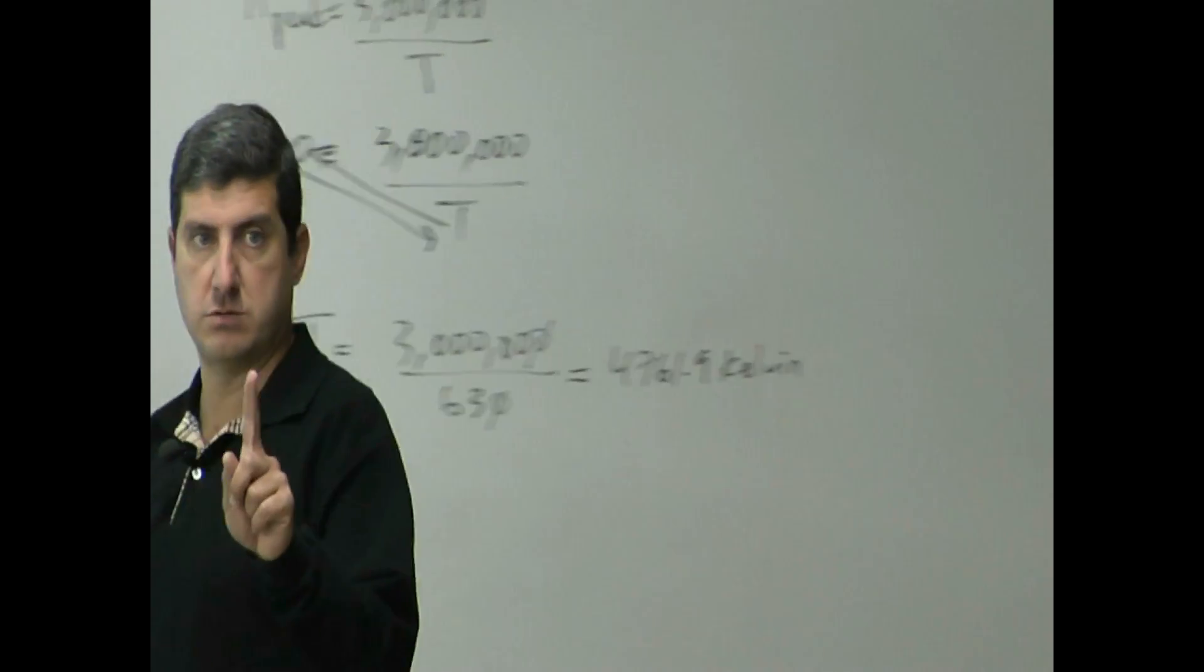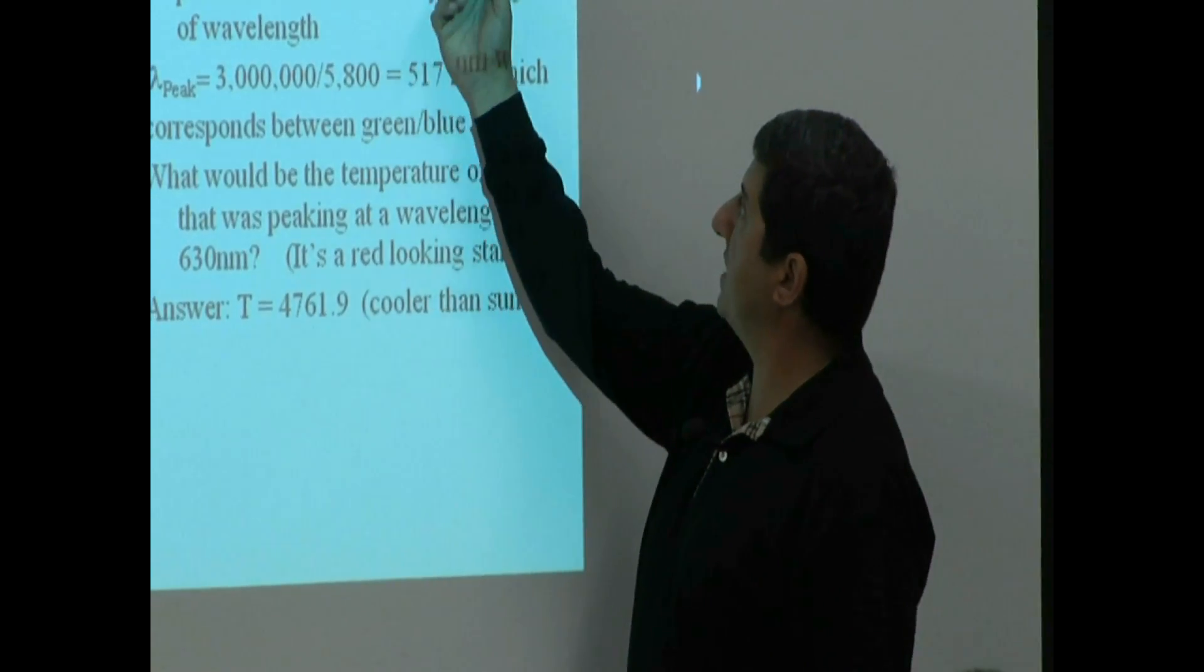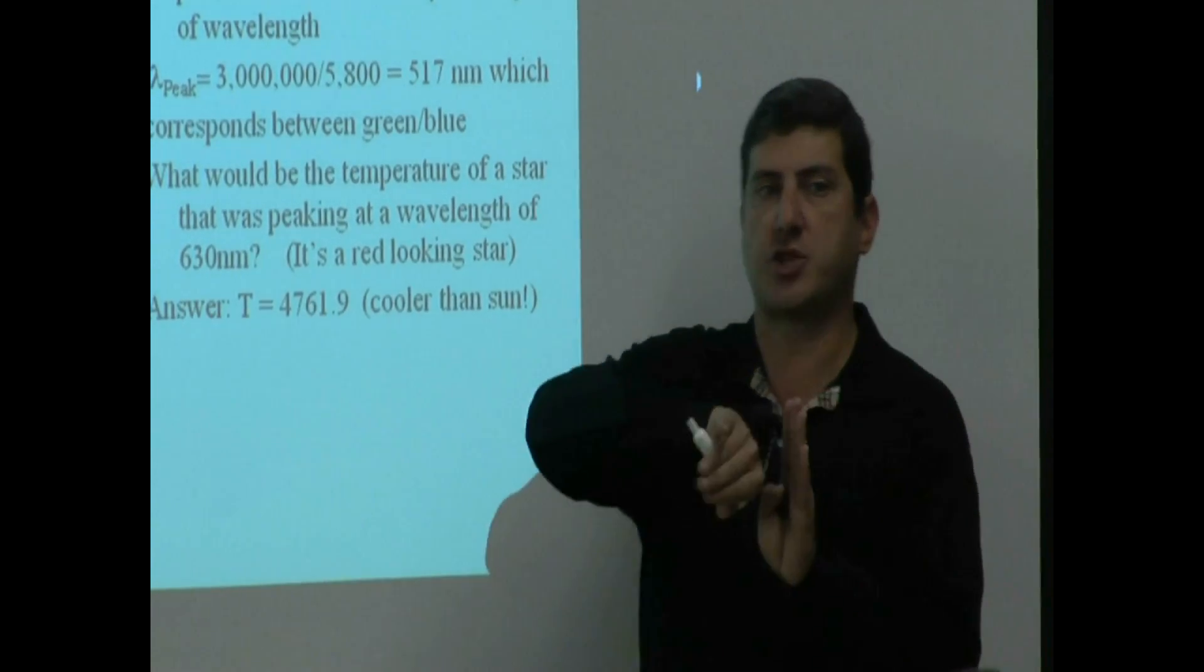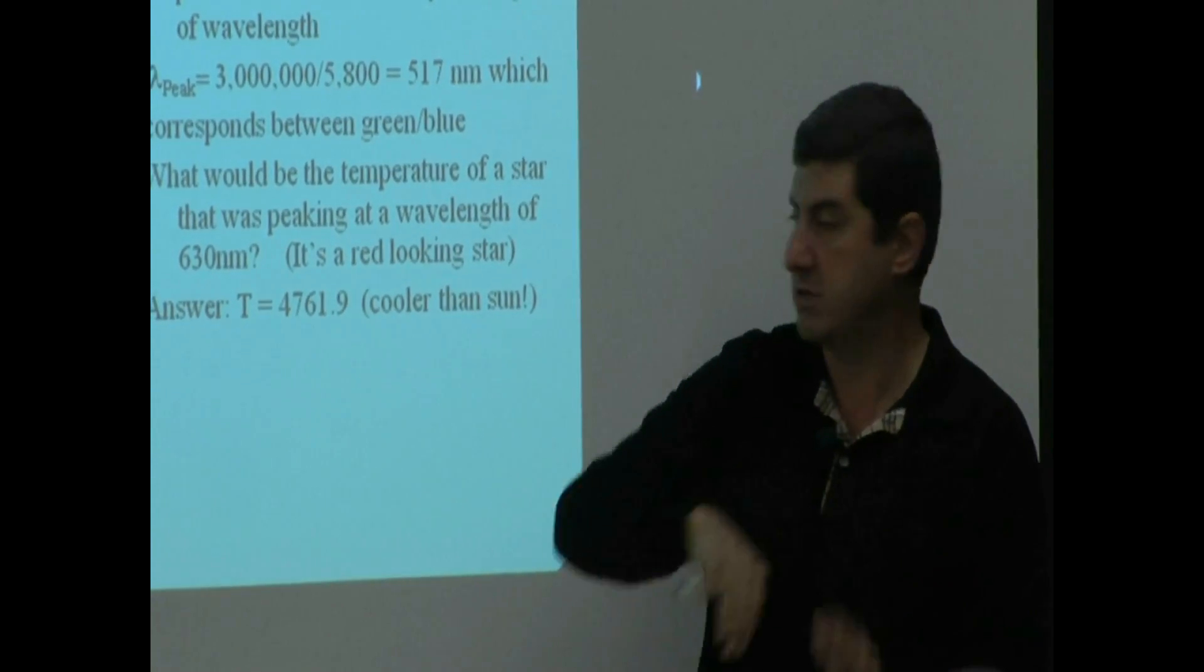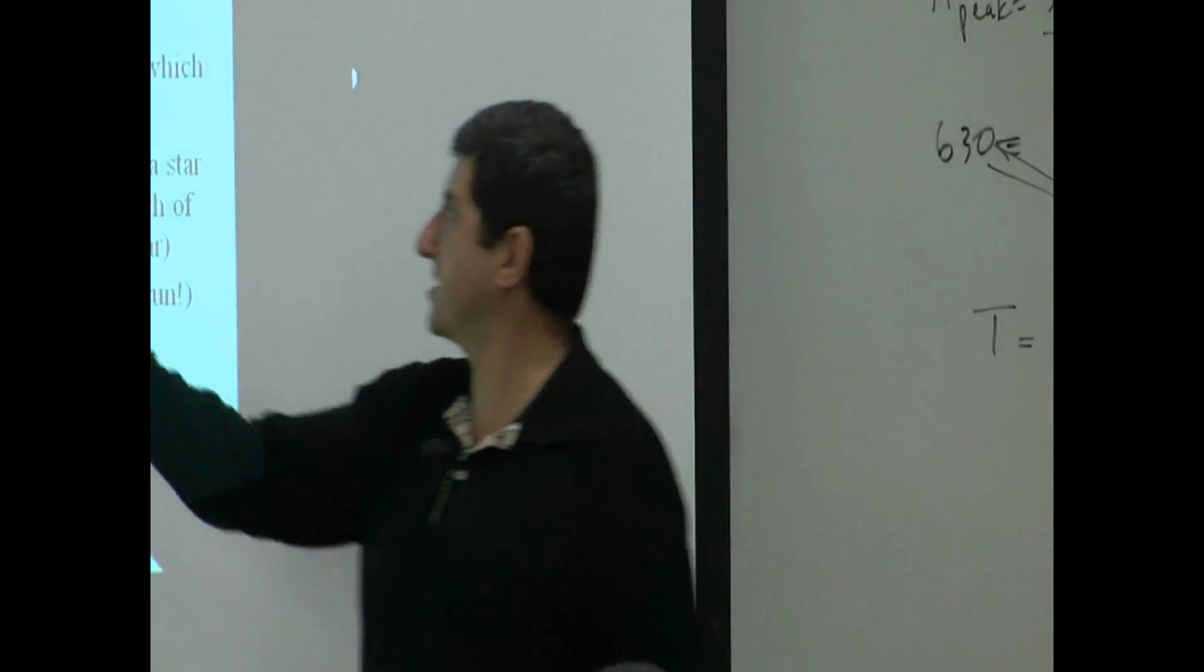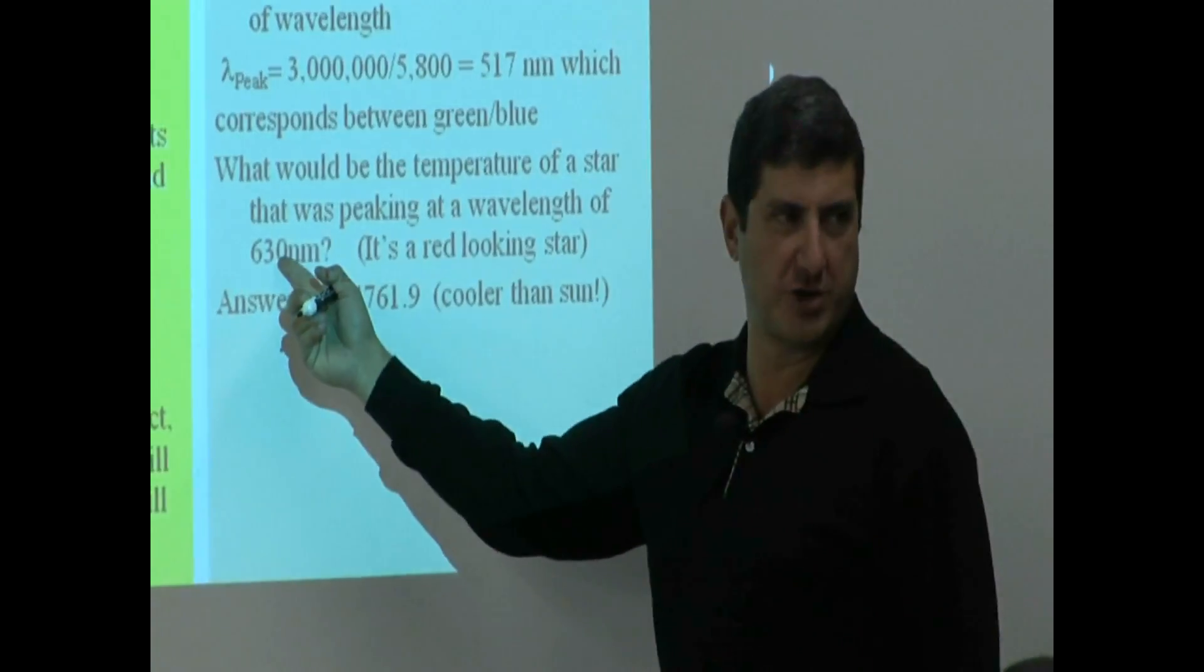So which star is colder? This star, right? Our sun is what? 5,800 kelvin. This star is on the cold side of stars. It's at the colder end. Colder end means it's going to appear more red. And 630 nanometers corresponds to a wavelength of a red-looking star.